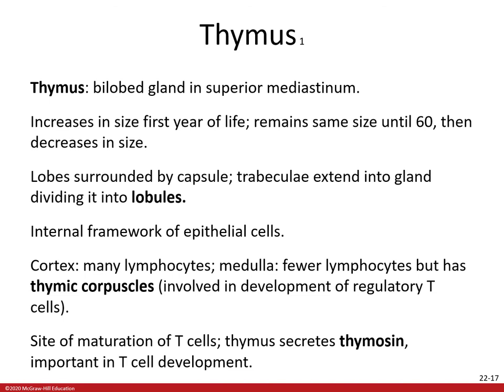The cortex of the thymus has many lymphocytes. The medulla has fewer lymphocytes but has a thymic corpuscle. For more than 150 years the function of the thymic corpuscle was unknown, but now we know it is involved in the development of regulatory T cells — a type of lymphocyte. This suppresses the body's immune response and protects it against autoimmune diseases, where the body essentially attacks itself.